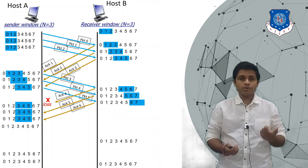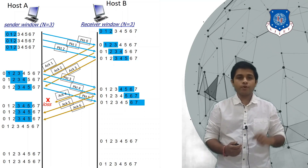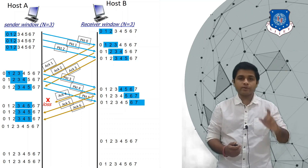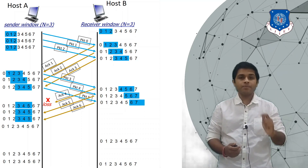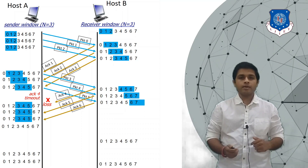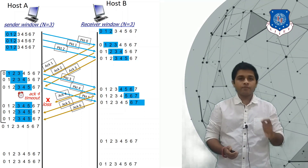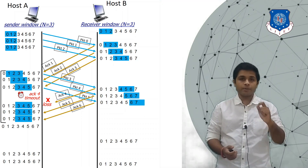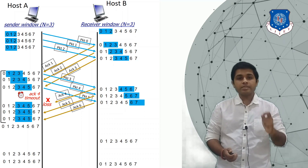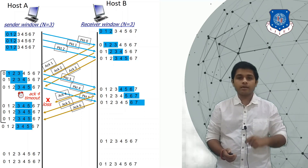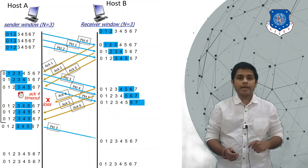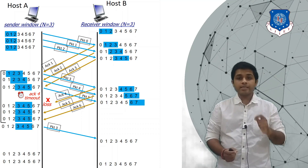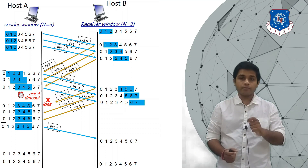Because this is ARQ, A will wait for a fixed amount of time after sending every packet. If it is not getting any acknowledgement, A will send that particular packet again. After waiting for the timeout period and not receiving ACK 4 for packet 3, A will retransmit packet 3.